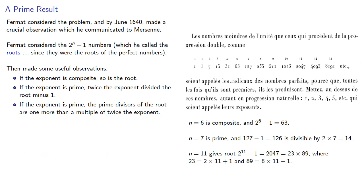The importance of these observations is twofold. First, it tells us that we shouldn't even bother with exponents that are composite, because the root will be guaranteed composite. Second, if 2^n - 1 is composite, the last of Fermat's observations gives us a list of what the prime factors might be.